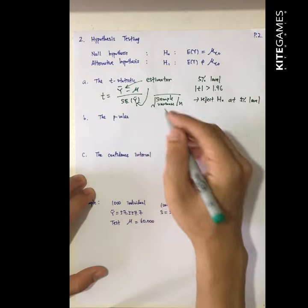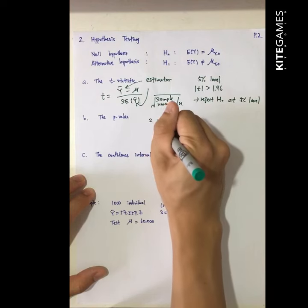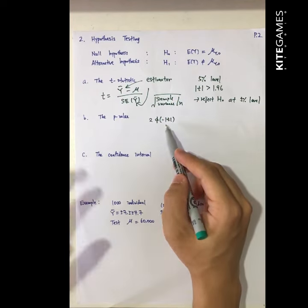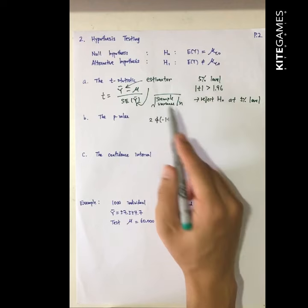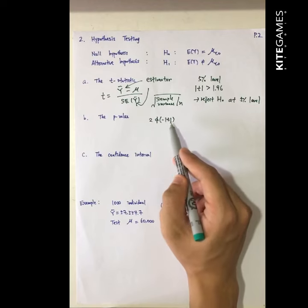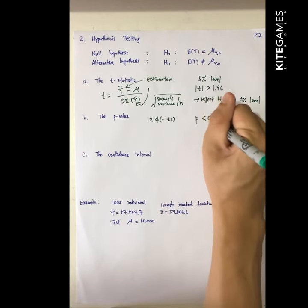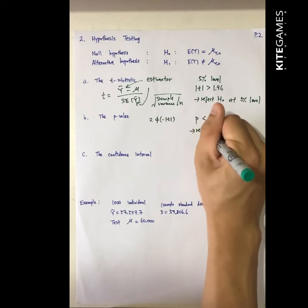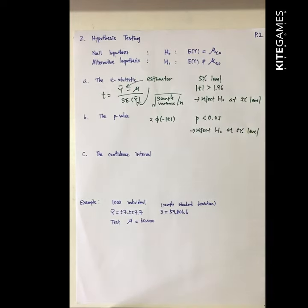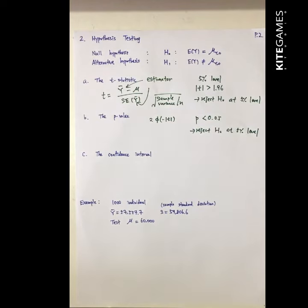The second instrument is the p-value, defined as 2 times the probability of negative t. After you calculate the t-statistic, you put a minus sign on it and go to the probability table to find that probability. If p is smaller than 0.05, you can reject the null hypothesis at the 5% level. To calculate the p-value you need a t-statistic probability table, and we'll do some examples later.